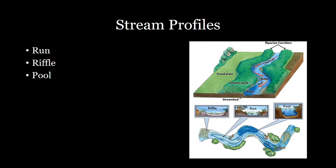As you move down a river, you have a number of characteristic features that tend to repeat themselves. One of those are runs, which are relatively straight, moderately deep rivers where you have flow accelerating downstream. Then you have riffles, which are areas that are relatively shallow, wide, with a lot of rocks and vegetation.